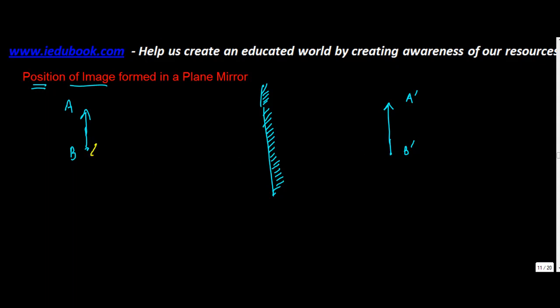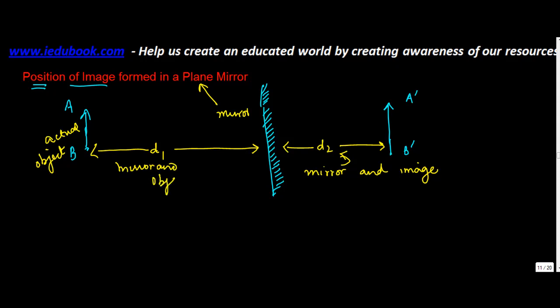Then, the point that needs to be noted is that the distance, D1, which is there between the actual object and the mirror, the plane mirror, let's call it as D1, and the distance between the mirror and image, and this is the distance between mirror and object. Both these distances are equal. So, D1 is always equal to D2.